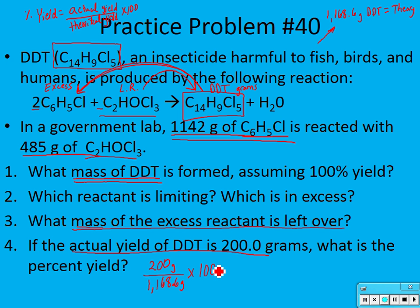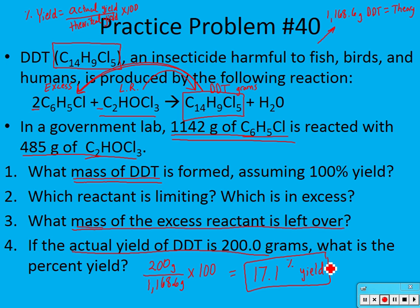17.1% yield — it doesn't seem very good. That's a pretty low percent yield, but some reactions just really are low. There are a lot of reasons for that as we talked about earlier. That's a good problem — I know it's a long one. Hopefully that makes sense. If you need to, go back through the problem and watch it again.